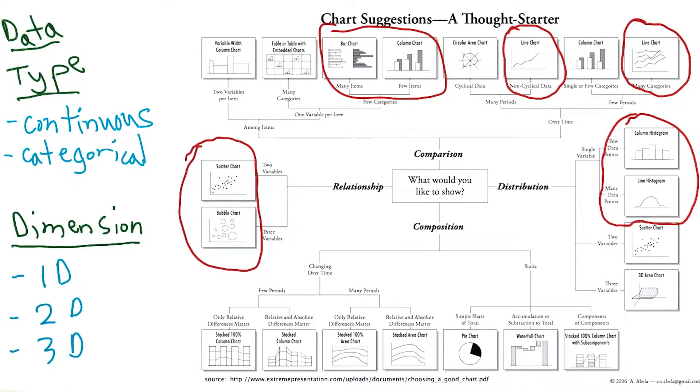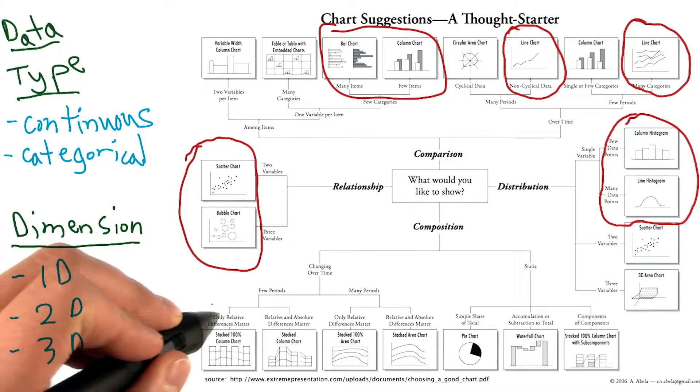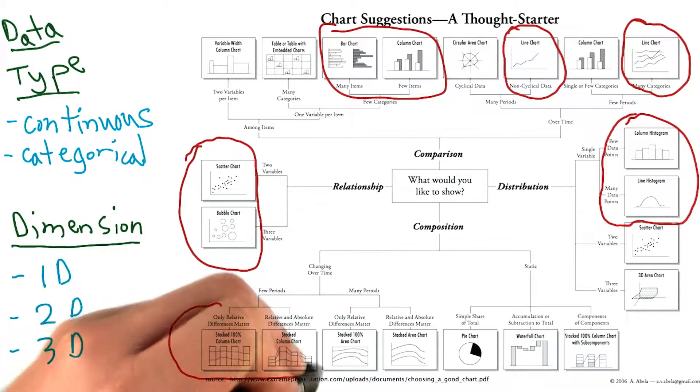The last relationship I want to cover is that of proportions or comparisons. If you have multiple categories and want to show how the magnitude of each compares to every other, you can use a stacked or unstacked bar chart.